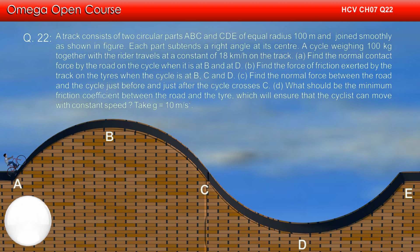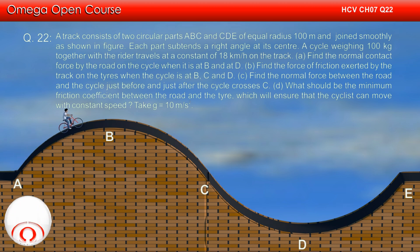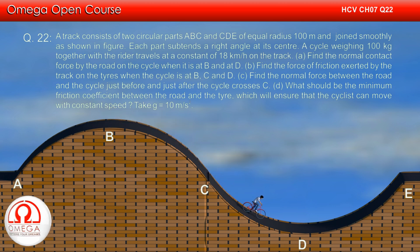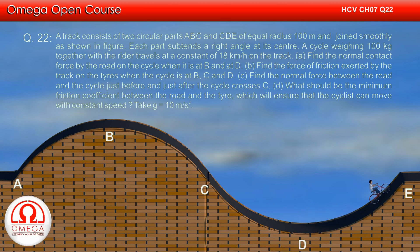A track consists of two circular parts A, B, C and C, D, E of equal radius 100 m and join smoothly as shown. Each part subtends a right angle at its center. A cycle weighing 100 kg together with the rider travels with a constant speed of 18 km per hour on the track.